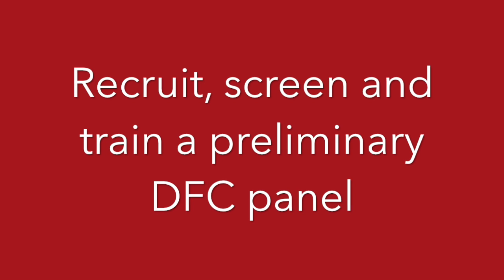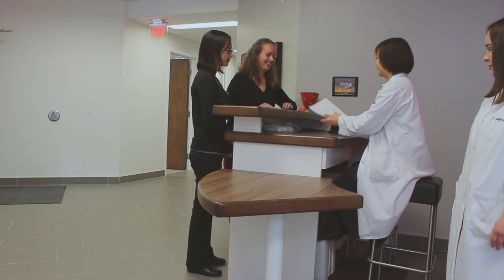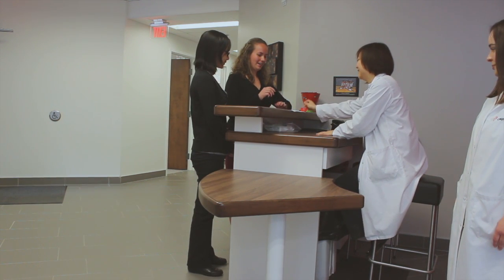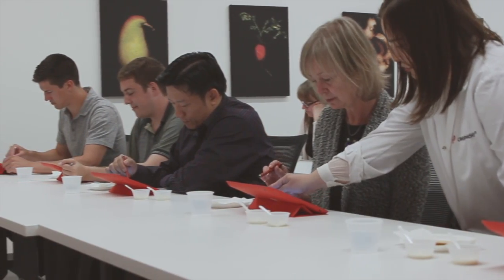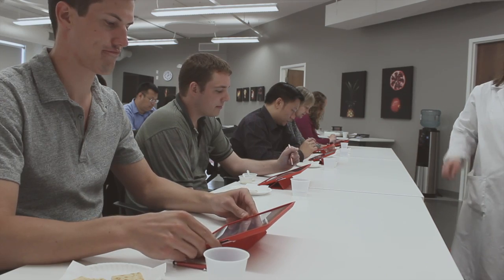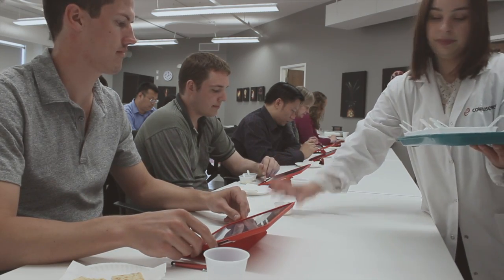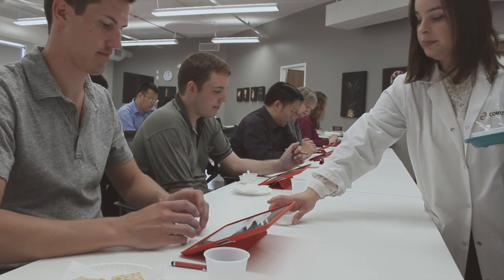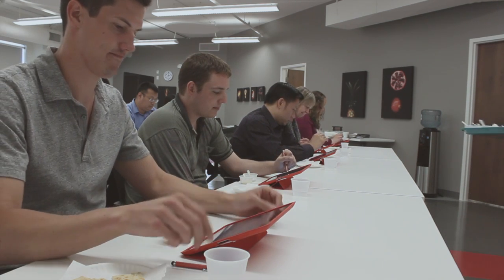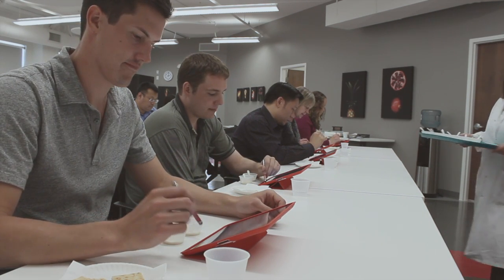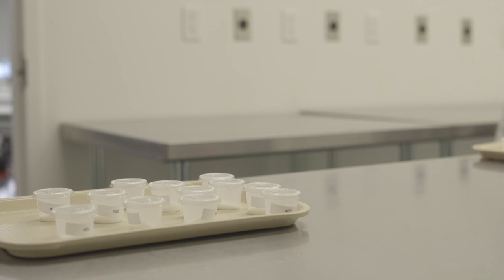Step two: recruit, screen, and train a preliminary DFC panel. Developing an effective panel is an essential step in creating your quality control program. First and foremost, potential panelists must be screened to determine if they are discriminators. To do this, use a difference test that includes both acceptable samples and intentionally spiked samples with a common fault for that product.